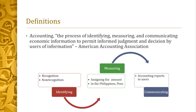For identifying — Step One — it is the recognition or non-recognition of a business transaction. There are business transactions that are exempt from recording in the accounting books because they have no monetary impact on the financial standing of the entity.